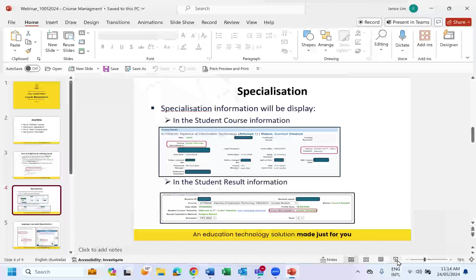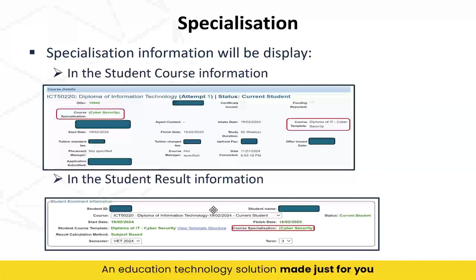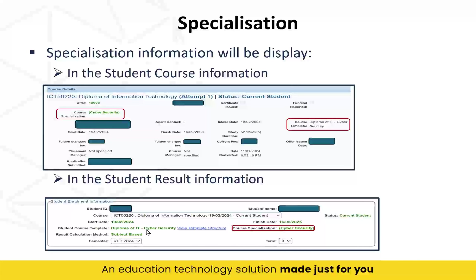Once we have set up specialization and a student has been enrolled, we can drill into the student profile under the Course Information tab. Once you click in there, you will see the course specialization selected — denoted here. It also tells you the course template that has been set up. The other place to see it is under Results — once you click into the Results icon, at the very top of the summary page you will see the course specialization listed.